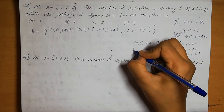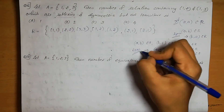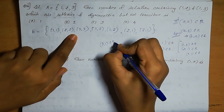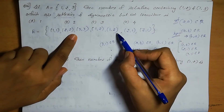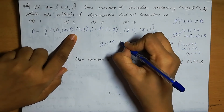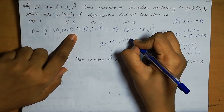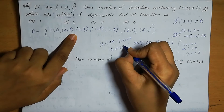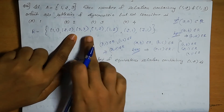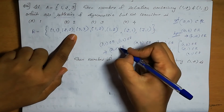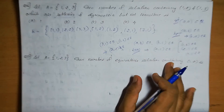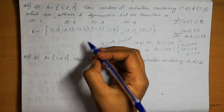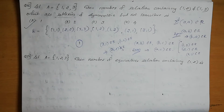Including only the pairs (1,2), (1,3) along with the reflexive and symmetric pairs, we can write only one such relation. So the answer is 1, option A is the correct answer.